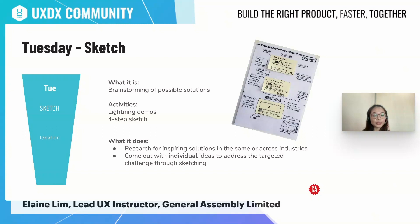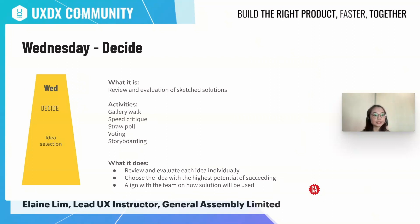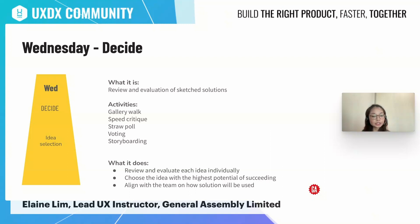Once that's done, the team moves into Wednesday, where they decide on what solution they will be choosing. The team puts their individual ideas up and conducts an activity called a gallery walk, where they assess and review each idea individually and without talking. The ideas need to speak for themselves and be self-explanatory because the owner will not be there to provide any supporting explanations. The team then chooses the idea with the highest potential of addressing the sprint challenge and sprint goal, followed by storyboarding, where the team aligns on how the solution will be used in the context of the problem space.